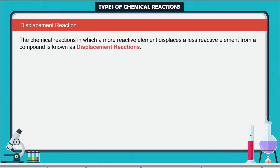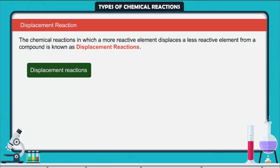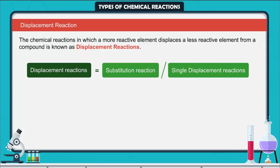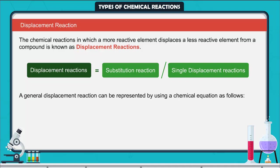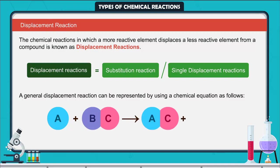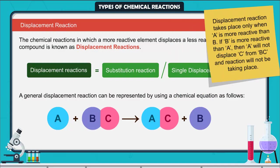Displacement reaction. The chemical reactions in which a more reactive element displaces a less reactive element from a compound are known as displacement reactions, also called substitution or single displacement reactions. The general displacement reaction is: A + BC → AC + B. Displacement reaction takes place only when A is more reactive than B. If B is more reactive than A, then A will not displace C from BC and the reaction will not take place.